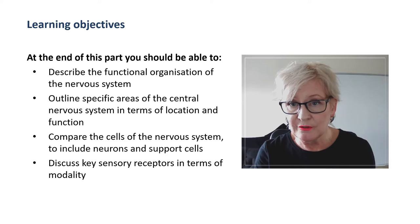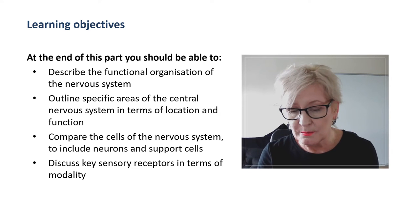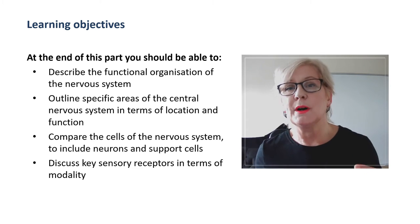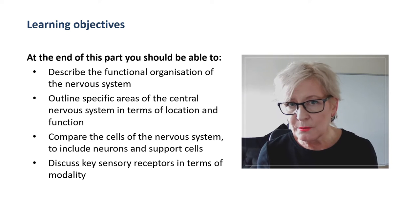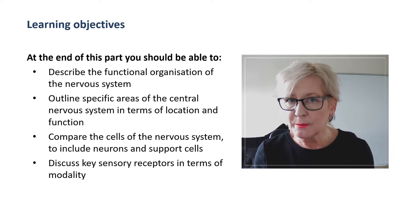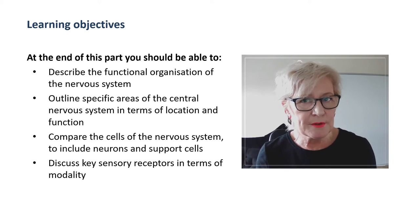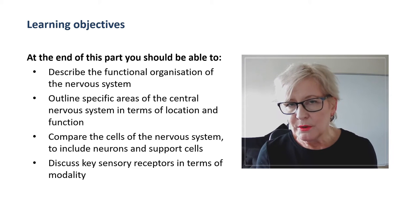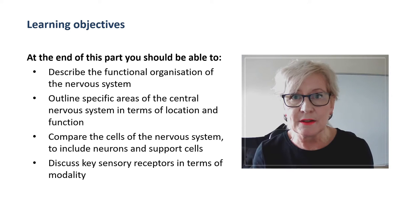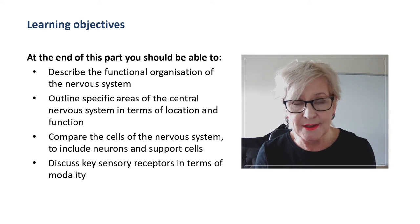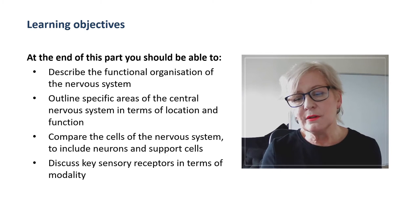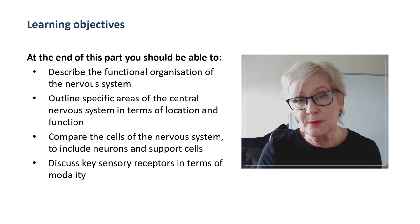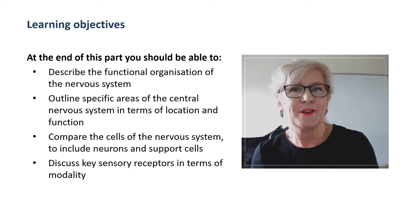Welcome to our first part of neurophysiology. In this part we're going to look at the organisation of the nervous system. We'll look at the afferent pathways feeding into the central nervous system and the efferent pathways feeding out. We will mention the autonomic nervous system but in this topic we're really going to focus more on the sensory pathways and the motor pathways. This first part will look at the overall organisation and the differences between the central and peripheral nervous system.